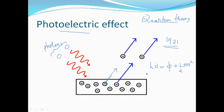This is the famous equation proposed by Albert Einstein: the energy of the incident photon is used up to liberate the electron, which is the work function, and the rest of the energy is provided as the kinetic energy of the moving electron.